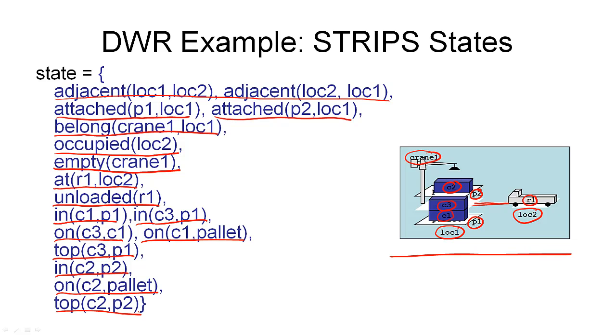These are all the ground atoms that hold in the state depicted here. And what this means is, according to the closed world assumption, that all the atoms that are not mentioned in the state do not hold. They are not true. For example, the ground atom at R1, location one, does not hold.